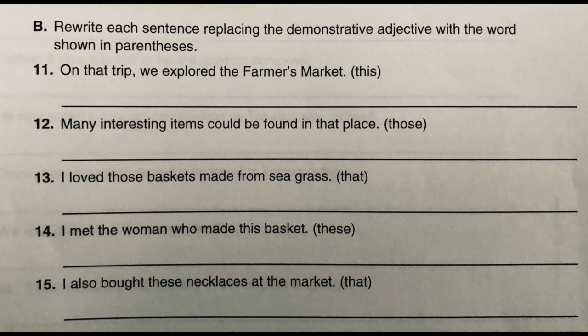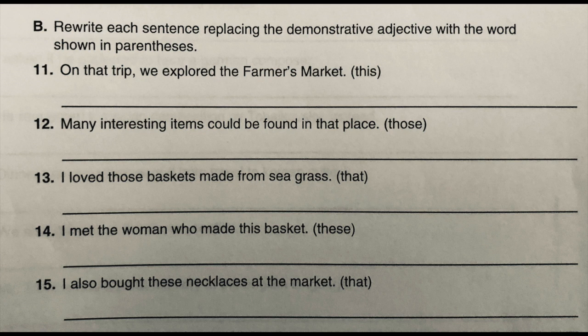Let's look at Part B. The instructions say: rewrite each sentence, replacing the demonstrative adjective with the word shown in parentheses. You will need to write these sentences. Number 11: 'On that trip, we explored the farmer's market.' The demonstrative adjective is 'that,' which means we're talking about a trip that occurred at a later period of time, not more recently. We want to replace 'that' with 'this': 'On this trip, we explored the farmer's market.' That would mean a trip that more recently occurred. Note that you need a comma after the introductory phrase 'on this trip' — just throwing in a little extra lesson there.